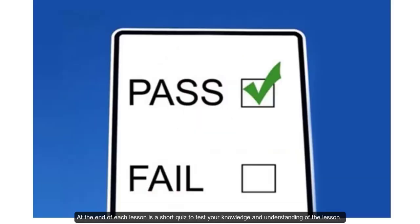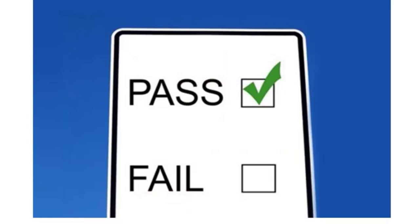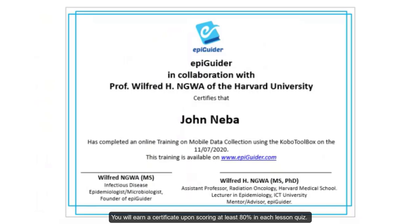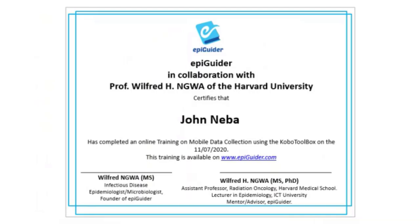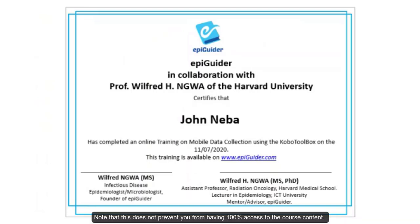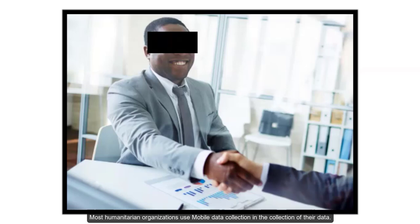At the end of each lesson is a short quiz to test your knowledge and understanding. You will earn a certificate upon scoring at least 80% in each lesson quiz; if you choose to go for this, you will have to pay 20 US dollars. Note that this does not prevent you from having 100% access to the course content. Most humanitarian organizations use mobile data collection, and acquiring this skill might just open up more doors for you.